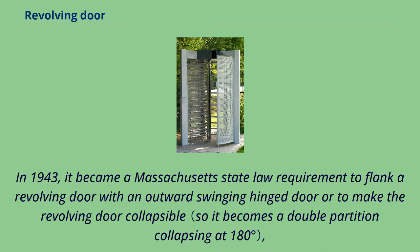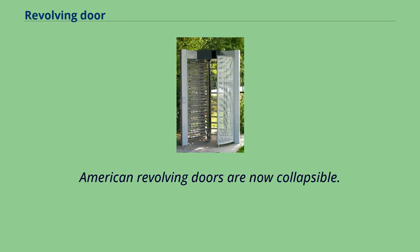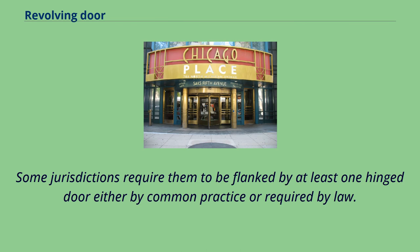In 1943, it became a Massachusetts state law requirement to flank a revolving door with an outward swinging hinged door, or to make the revolving door collapsible, allowing people to pass on either side. American revolving doors are now collapsible. Some jurisdictions require them to be flanked by at least one hinged door, either by common practice or required by law.